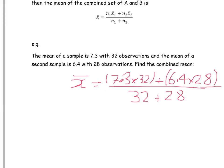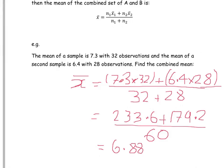So if we just figure out what the top bit is, 7.3 times by 32, which is 233.6, and we add on the second one, which is 6.4 times by 28, we get 179.2. And the total number of observations is 60, then we can just figure that out. So divided by 60, our combined mean is 6.88.